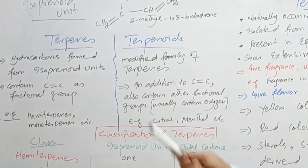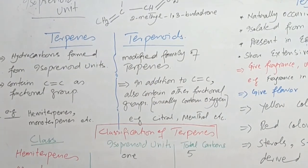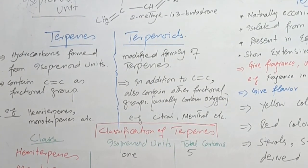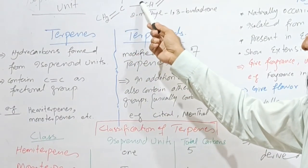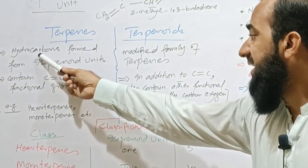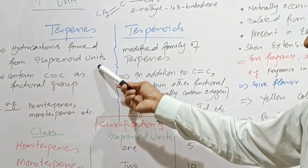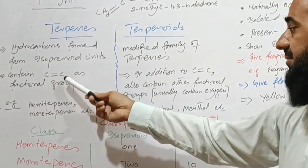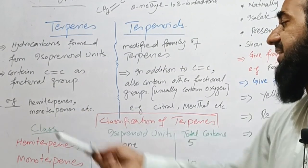What is the difference between terpenes and terpenoids? If the organic compound is formed only by the combination of isoprenoid unit then terpenes are formed. Terpenes are simply hydrocarbon formed from isoprenoid units. They contain carbon-carbon double bond as functional group and their few examples are given here.